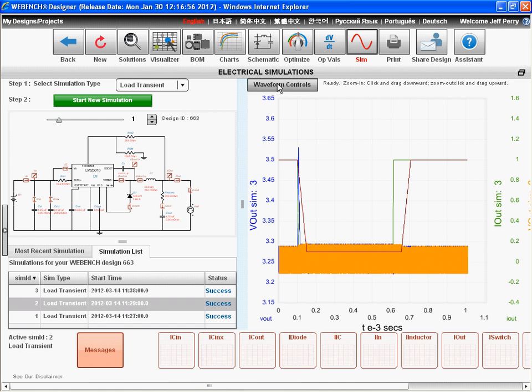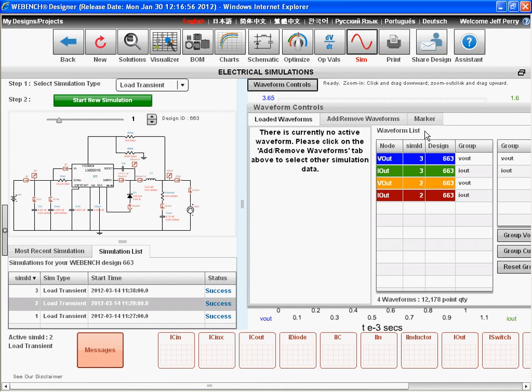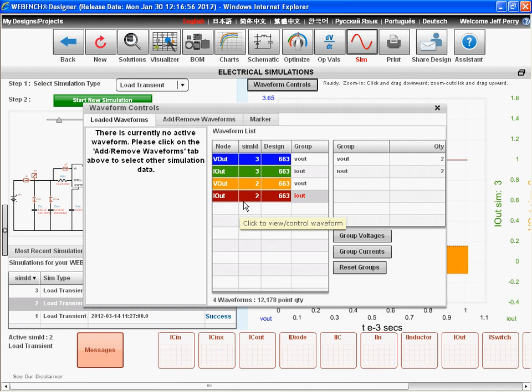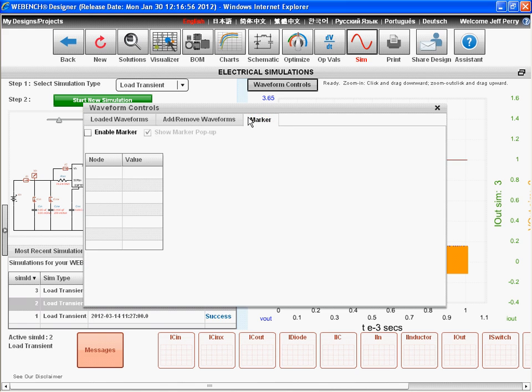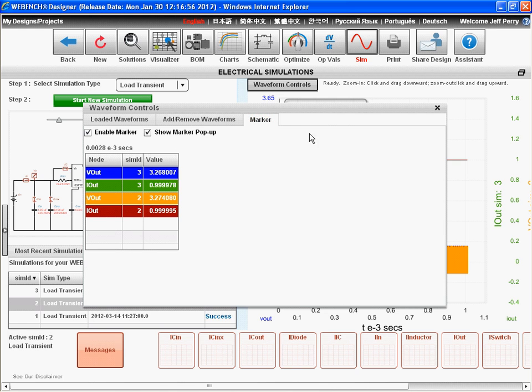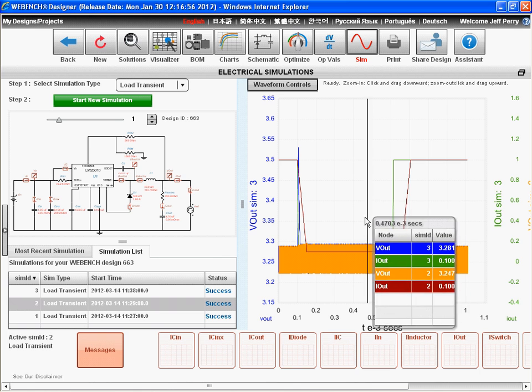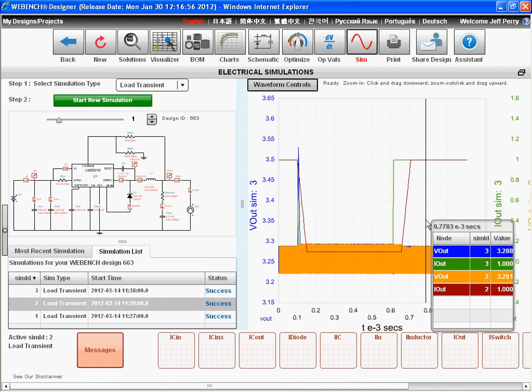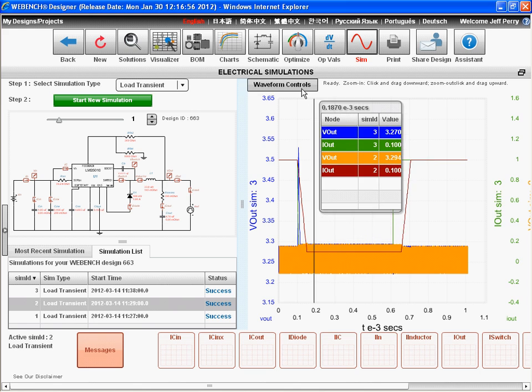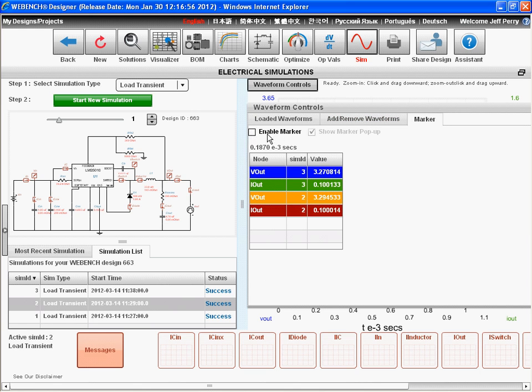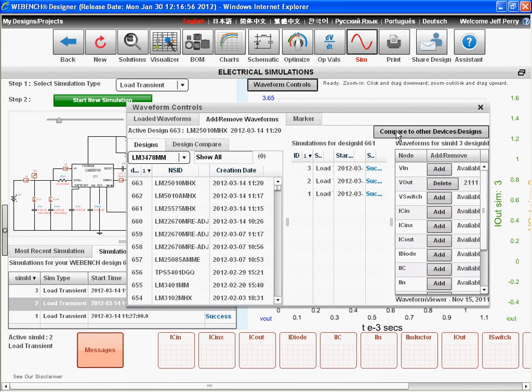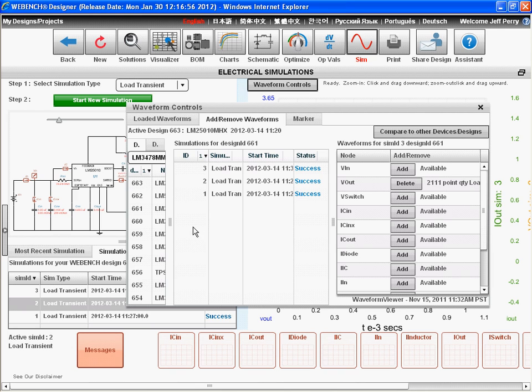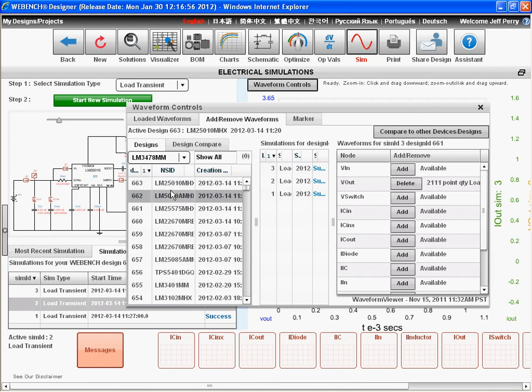There's also advanced waveform controls. If you click the waveform controls button, this allows you to manipulate things like the color of the waveforms and the line thickness. You can also click the marker button up here to enable the marker. And this will show a pop-up that allows you to look at individual values of the waveform at specific points. You can also compare to previous designs and simulations if you click on the compare to other devices and designs button. From here you can go in and select previous designs we've run simulations and overlay those with your current design.